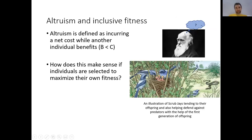Social behavior was actually quite difficult for Darwin to explain in the context of natural selection. If natural selection leads to the maximum fitness of an individual, it was hard for Darwin to explain why an individual would incur a cost to help another — sacrificing some of its own fitness benefits to increase the fitness of another. One behavior we see a lot with social behavior is altruism, defined as a net cost to one individual while another individual benefits.